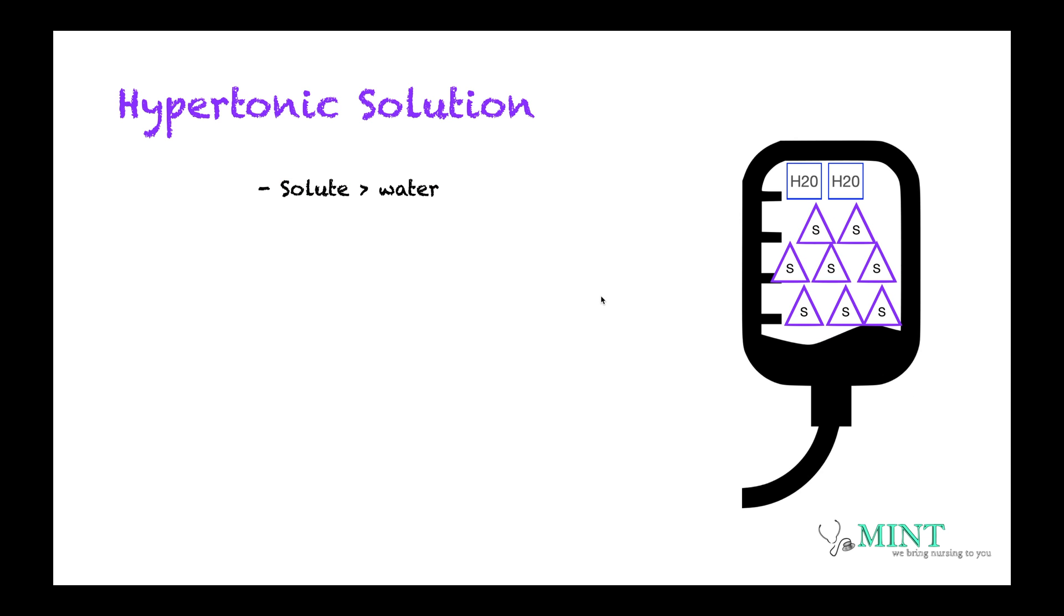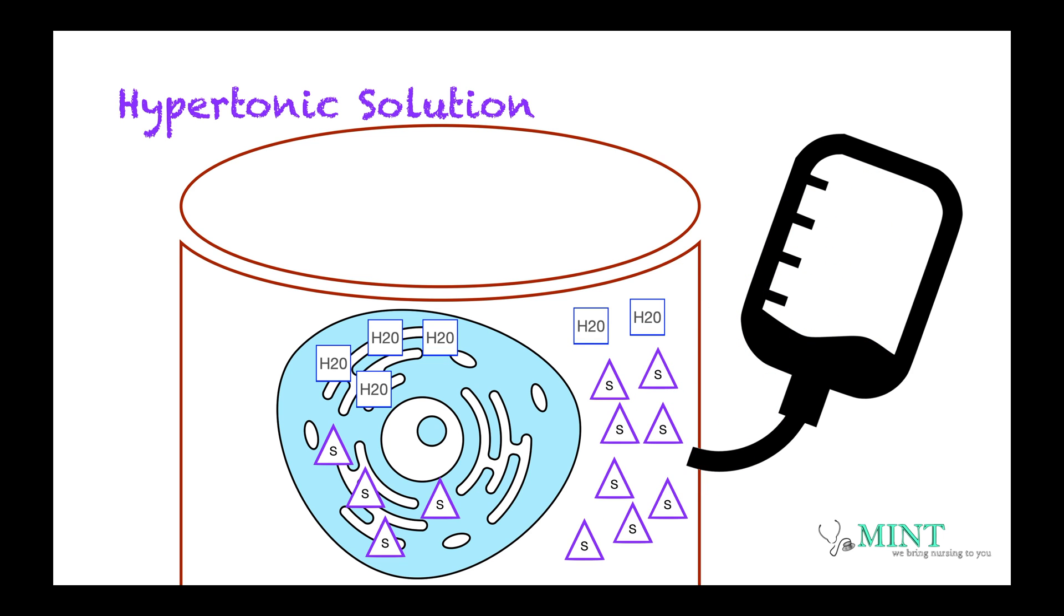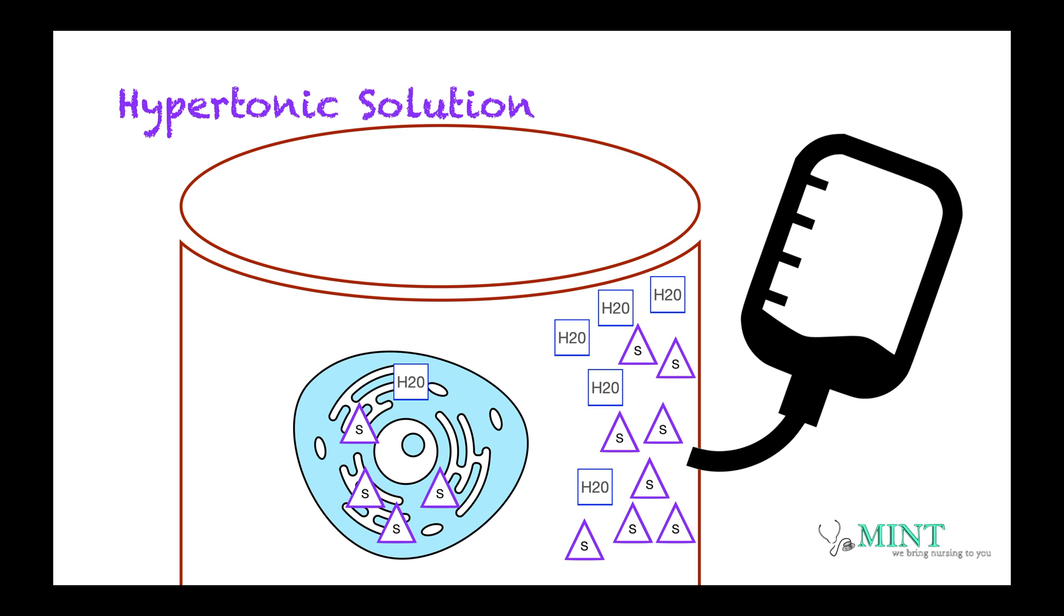And lastly, we have the hypertonic solution. And by the word hyper, it means more. Tonic is solute. So a hypertonic solution bag has more solute than water. Examples of your hypertonic solution is your D5 half NS, your D5 NS, your D10W, and NS 3%. So when we get a hypertonic solution inside our body, we are introducing a solution that has a much higher concentration than what's inside our cell. By the process of osmosis, it's going to pull water out of the cell. Thus, it shrinks the cell. So remember, hypertonic solution, it pulls water out of the cell.